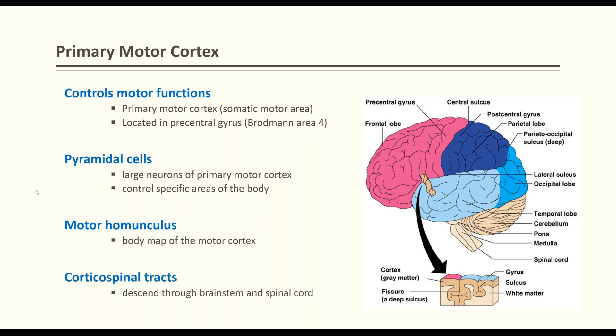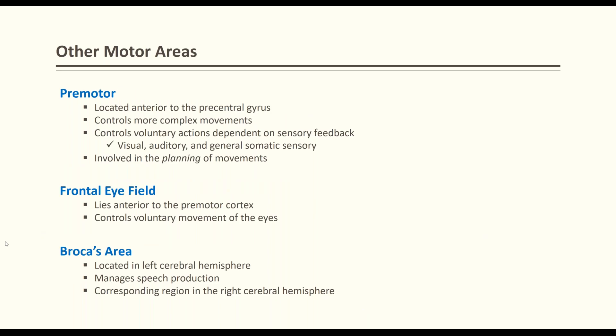The corticospinal tracts originate from the cortex and descend to control different muscles of the body. The premotor gyrus, located anterior to the precentral gyrus, controls more complex movement, voluntary actions, and is dependent on sensory feedback such as visual, auditory, and general somatic sensory input. It is involved in the planning and initiation of movement. The frontal eye field is located anterior to the premotor cortex and controls voluntary eye movements.